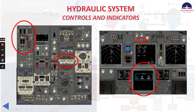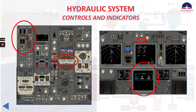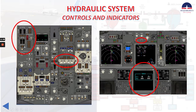The low pressure lights for the flight controls illuminate amber, indicating low hydraulic system A pressure to ailerons, elevator, and rudder. This light is deactivated when the flight control switch A is positioned to standby rudder and the standby rudder shutoff valve opens. Now if we talk about the flight spoilers for A and B systems — two positions: on and off. On is a guarded position and the normal operating position. Off closes the respective flight spoiler shutoff valve, and this switch is normally used for maintenance purposes only.